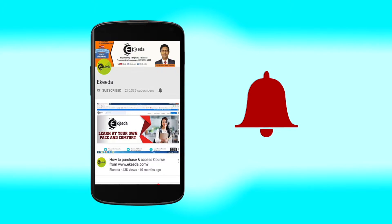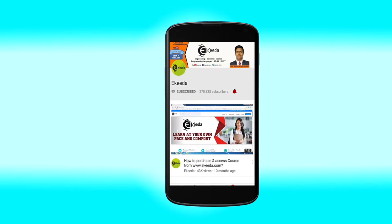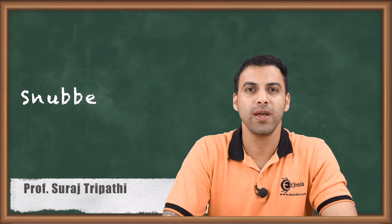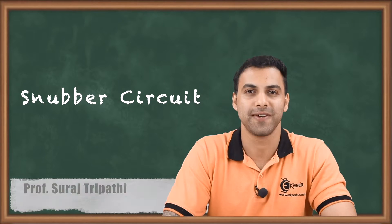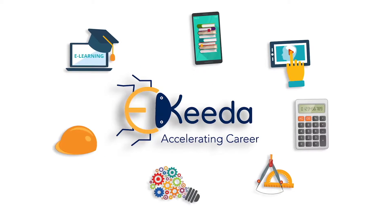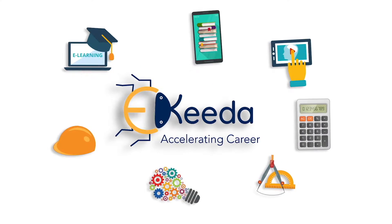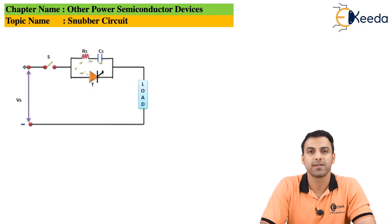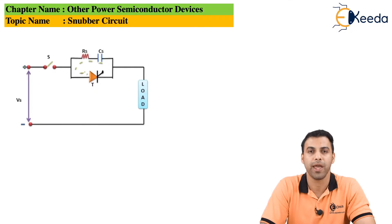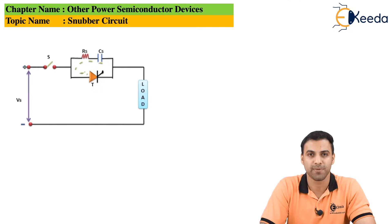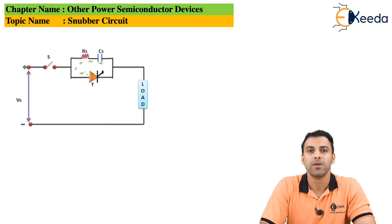Hello everybody, today we are going to discuss about snubber circuits. As we discussed about the dv/dt triggering of a thyristor, we came to know that because of dv/dt triggering, the thyristor undergoes unexpected triggering, causing the circuit to conduct unexpectedly. So the circuit needs to be protected against dv/dt triggering.